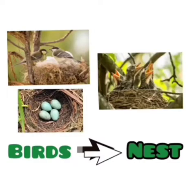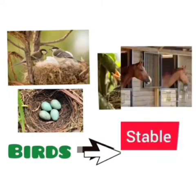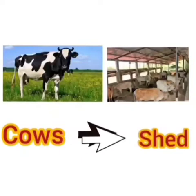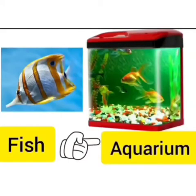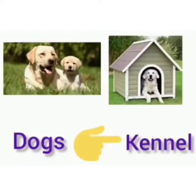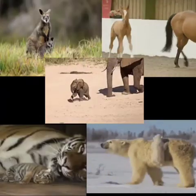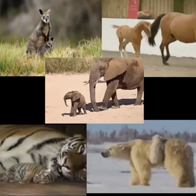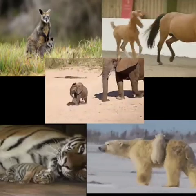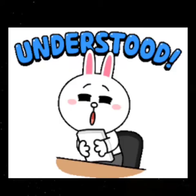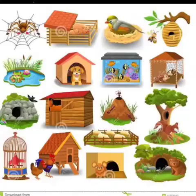Birds make their nests with straw, twigs, leaves, and cotton to lay eggs and raise their chicks. Horses are kept in a stable, cows are kept in a shed, fish are kept in an aquarium, and dogs are kept in a kennel. A home is also a safe place for the young ones or babies of animals.